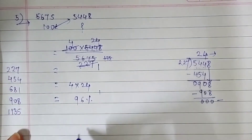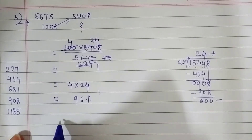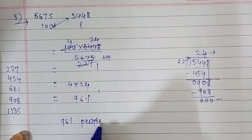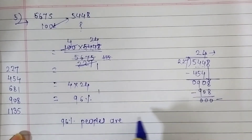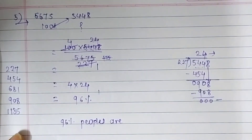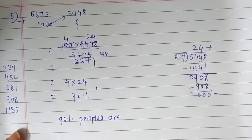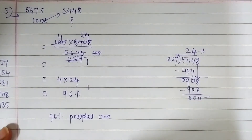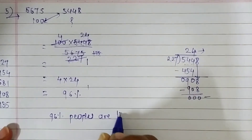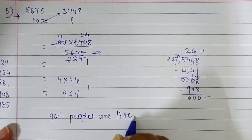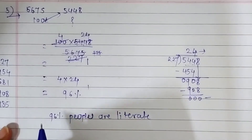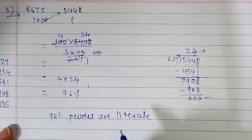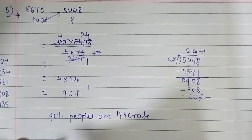So we can write the answer: 96% of people are literate, or the percentage of literacy in the village is 96%.